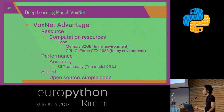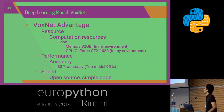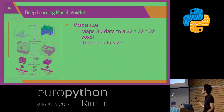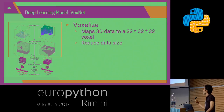BoxNet works in my environment with 32GB memory and a GPU. Performance-wise, it achieves 83% accuracy as reported in the paper. Speed-wise, it is open source with a simple core. The BoxNet process first maps 3D data to a 32×32×32 voxel grid. The size of 32 is configurable and reduces data size, which is important because 3D data is very rich.